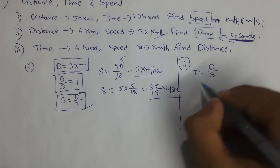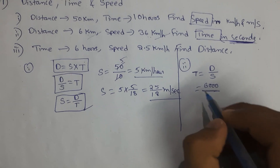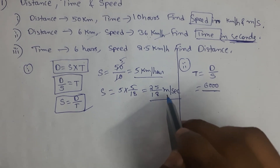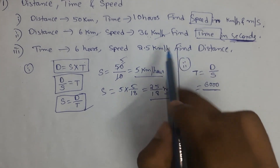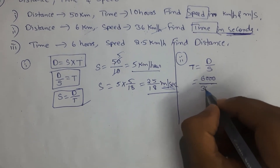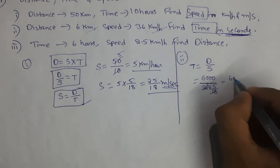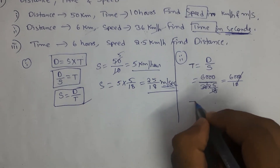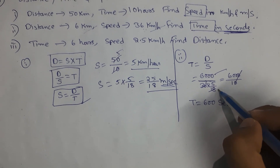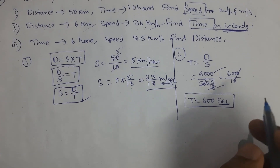Time is equal to distance divided by speed. The distance is 6 kilometers, that means 6000 meters, and speed is given in kilometers per hour — we want to convert it into meters per second. To convert kilometers per hour into meters per second we need to multiply it with 5 by 18. So time is equal to 600 seconds. Because distance is in meters and speed is in meters per second, the time will be in seconds.